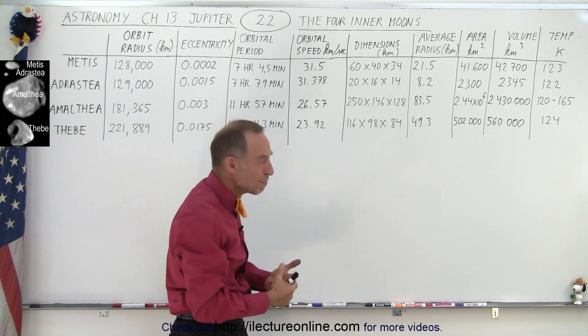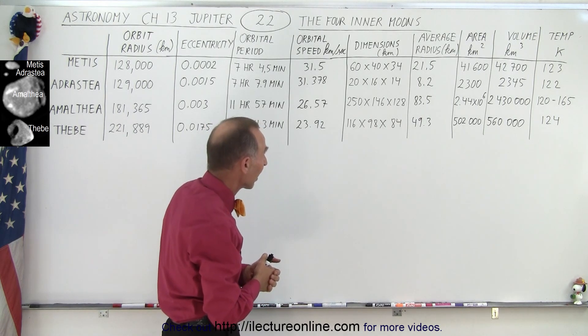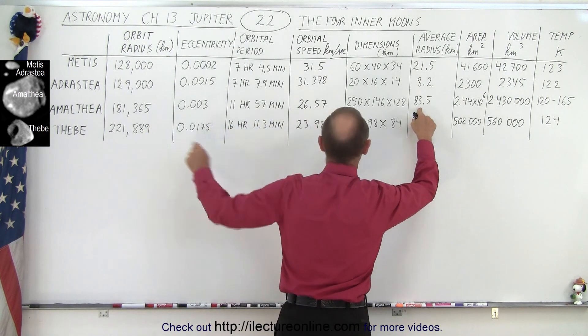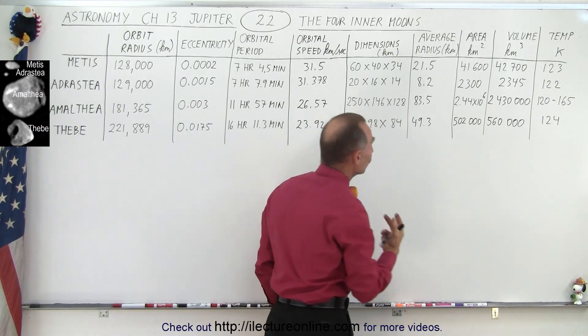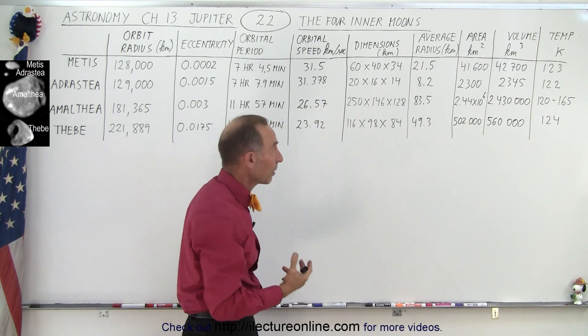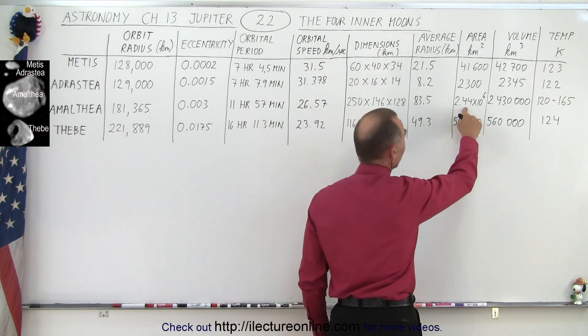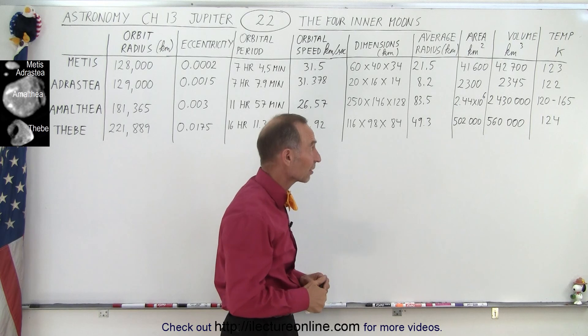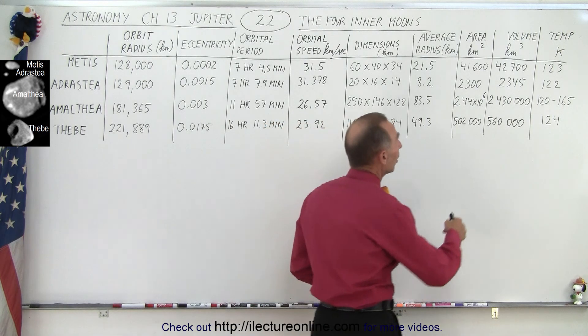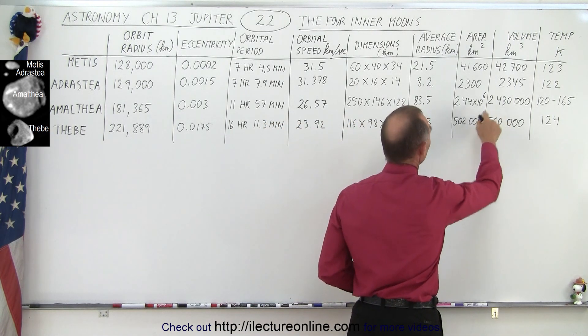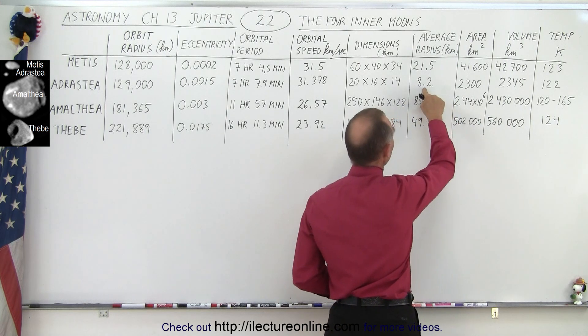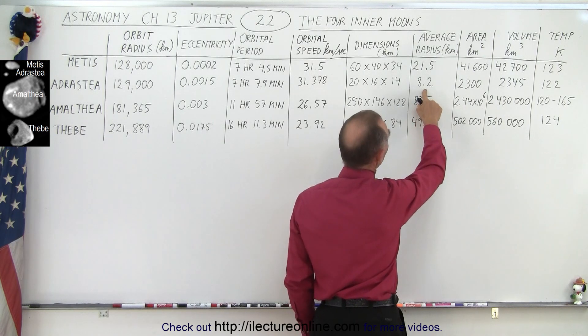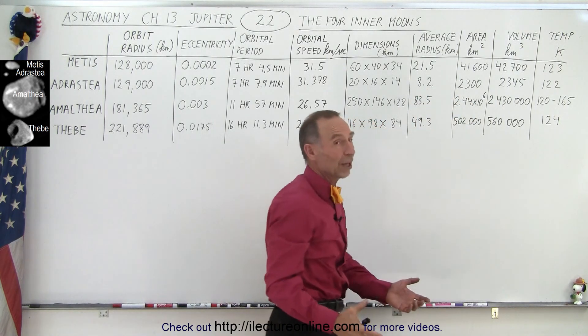So they're all essentially medium-sized asteroids. The big one is quite big. That would be Amalthea. It has an average radius of 83.5 kilometers, which gives us a total surface area of more than 2 million kilometers. So it's actually a fairly large object. And it has a volume of over 2 million cubic kilometers, as opposed to the smallest one has an average radius of 8.2 kilometers.